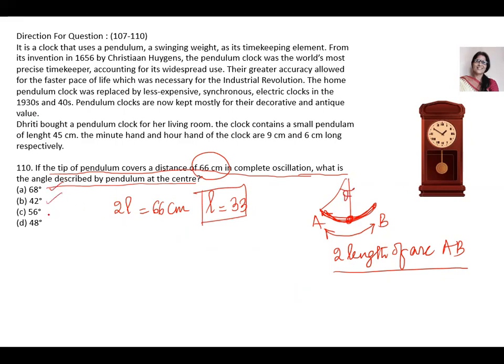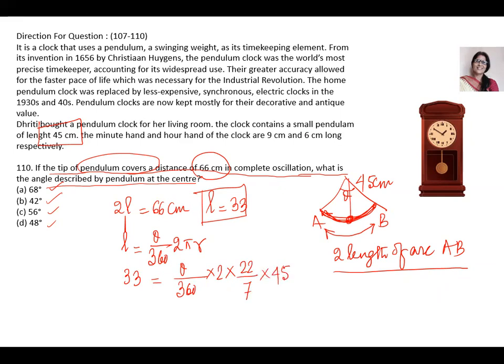L is 33. We have to get the angle. The options are 68 degree, 42 degree, 56 degree, 48 degree. Now radius is same as the length of the pendulum. It was given to 45 cm. So R is 45 cm. Now the relation between L and pi R. We know that L is equal to theta by 360 multiplied by 2 pi R. L is given to 33. Theta is not given, we have to find out. 2 pi is 22 by 7. And R is 45. So we will get what is theta. So theta will be 33 multiplies 360, multiplies 7 whole upon 22 into 45.